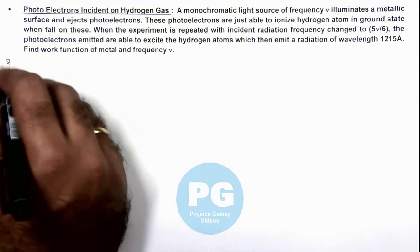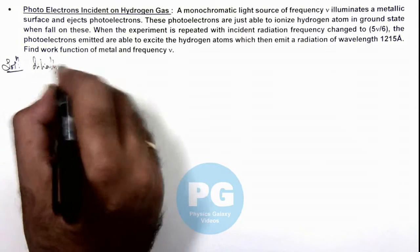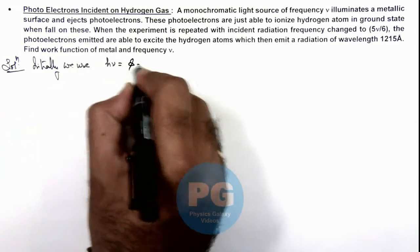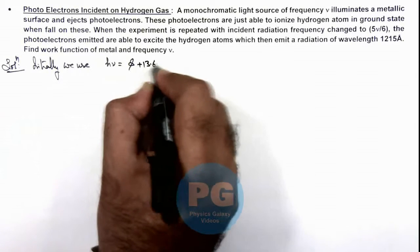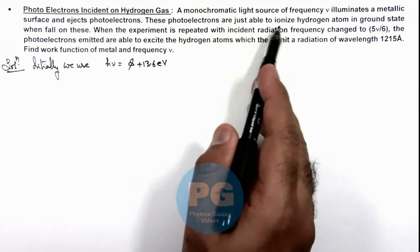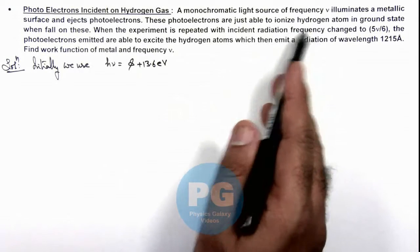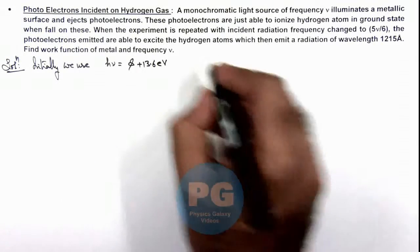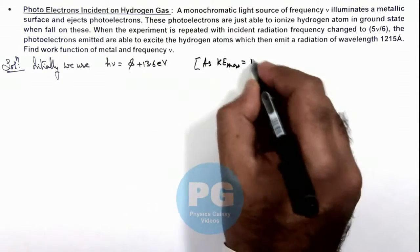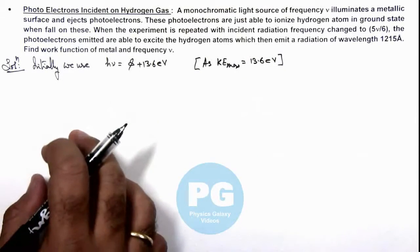Here we can directly write. Initially, we use hν = φ + KE_max, so we get 13.6 electron volts because in this situation we are given that photoelectrons are just able to ionize hydrogen atoms. That means the maximum kinetic energy of these photoelectrons must be 13.6 eV. As we are given that KE_max equals ionization energy, that is 13.6 electron volts for the ejected electrons.